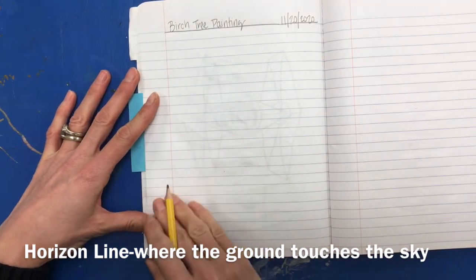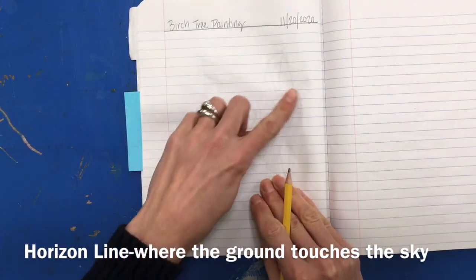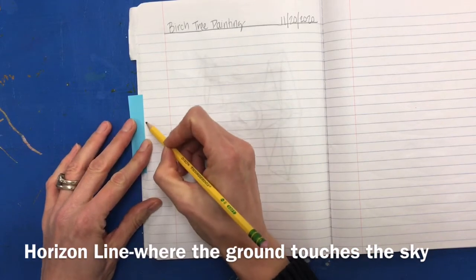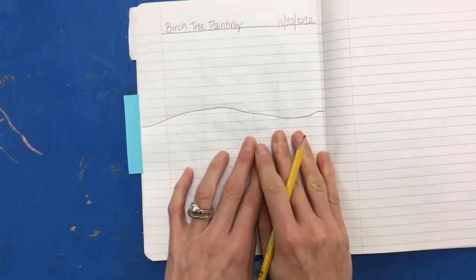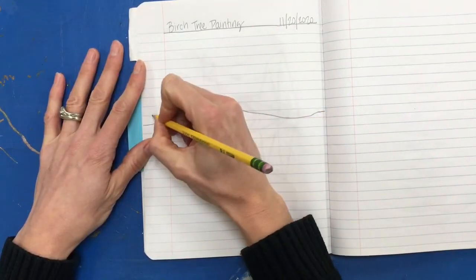It doesn't have to be straight, it can have some curve to it. I'd like you to write 'horizon line' on or by that line.